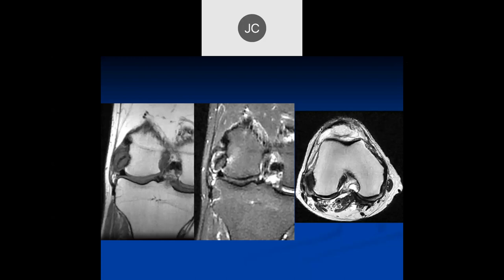It looks like there's some thickening of the popliteus tendon. This is a high-grade partial tear of the popliteus insertion with a little bit of avulsion injury to the bone — so that's a popliteus tear.